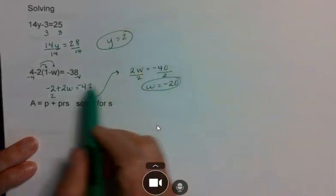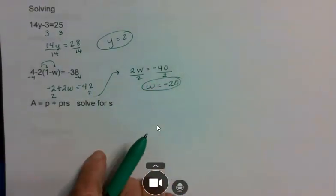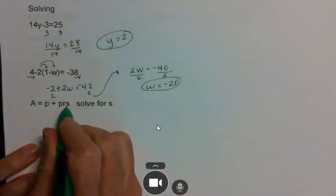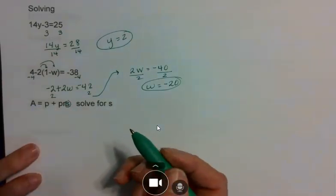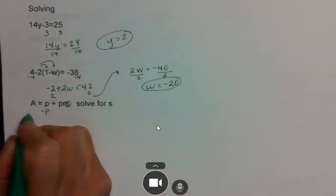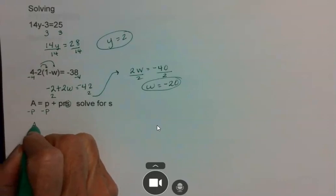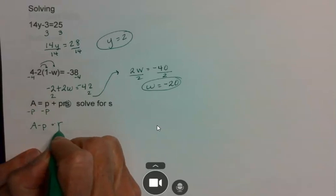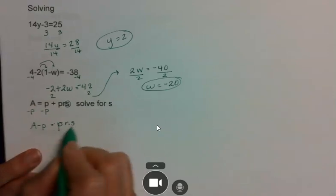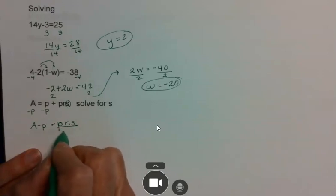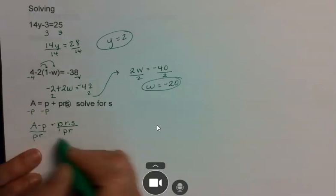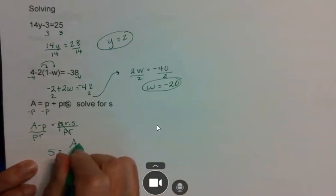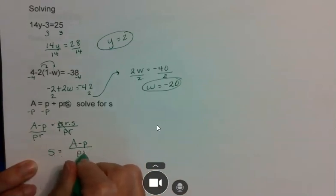You can always check by plugging your answer back in. Sometimes they ask you to solve for a variable without any numbers. This one asks you to solve for s. I subtract p from both sides, giving a minus p equals p times r times s. Since s is multiplied by r and p, I divide both sides by p times r, giving s equals a minus p divided by p times r.